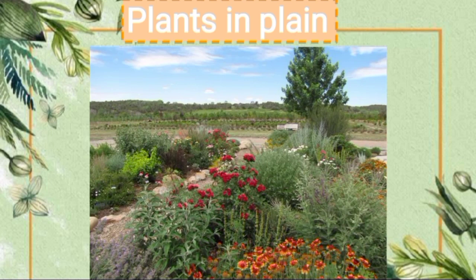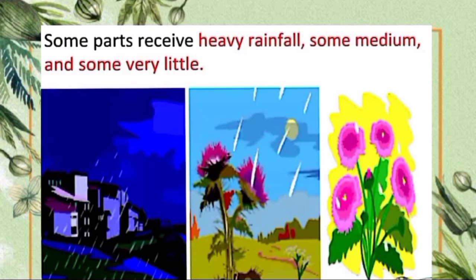Some parts of the plains receive heavy rainfall while others receive less rainfall. Mango, ashoka tree, and gulmohar are some trees that grow in areas with low rainfall. Their adaptations include many branches that spread out, and most of these trees shed all their leaves during the dry season. These are called deciduous trees.